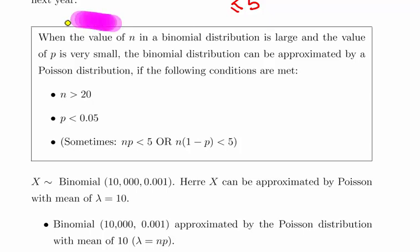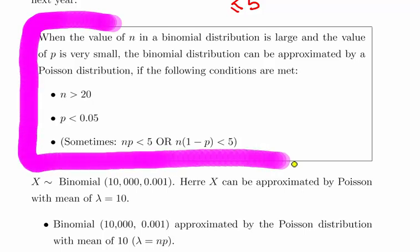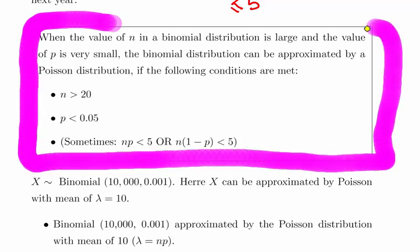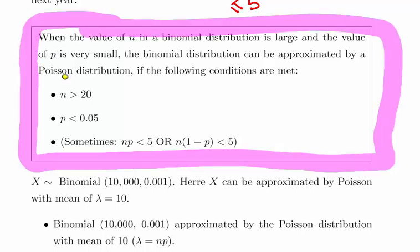What we have to do in the first instance is justify it, and this should always be part of your answer. When the value of n in a binomial distribution is large and the value of p is small, the binomial distribution can be approximated by a Poisson distribution if the following conditions are met.